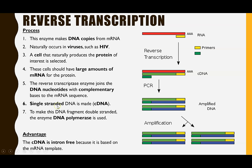The main advantage of reverse transcription is that because you are using mRNA, the introns are already removed. When you make complementary DNA from mRNA, you are making DNA which already has introns removed. That's incredibly important if you are doing genetic engineering involving prokaryotic cells like bacteria, because prokaryotic cells do not have the ability to remove introns. So having intron-free DNA is really advantageous.